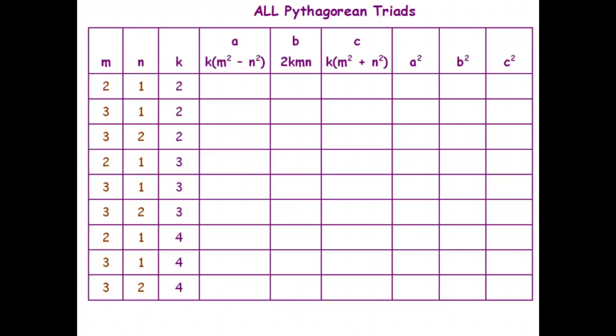So in this case, we've got three numbers that we have to choose. So we have m, n, and k. Now, m has to be bigger than n. So if m is 2, n is 1, and then k has to be 2 or larger. So for example, if m is 3, n can be 1 or 2, and then k can be any number. So let's go ahead and just generate one Pythagorean triad.